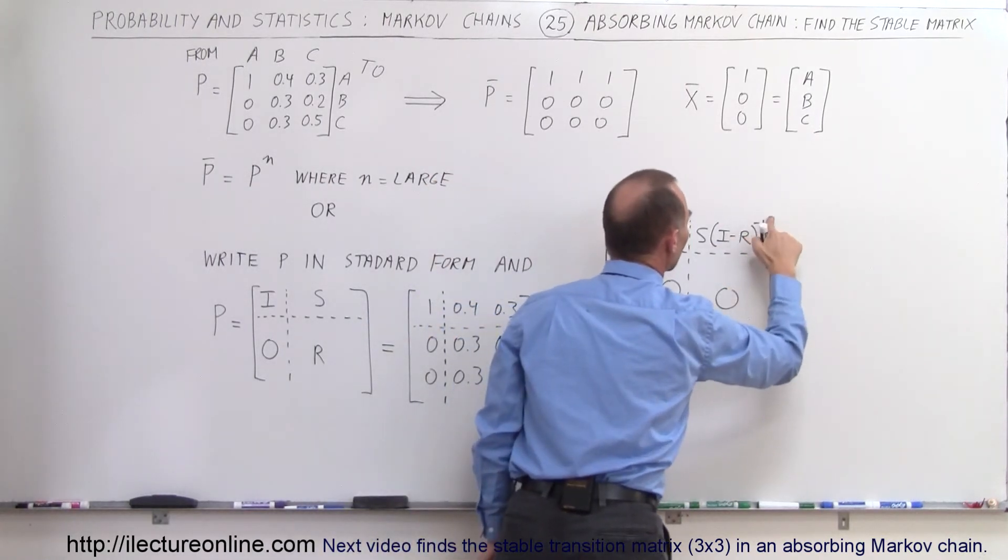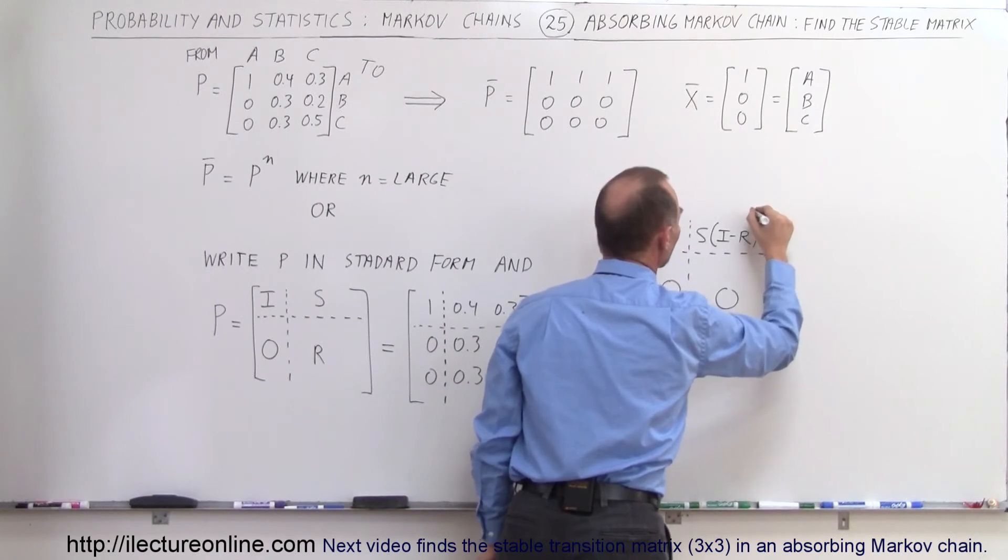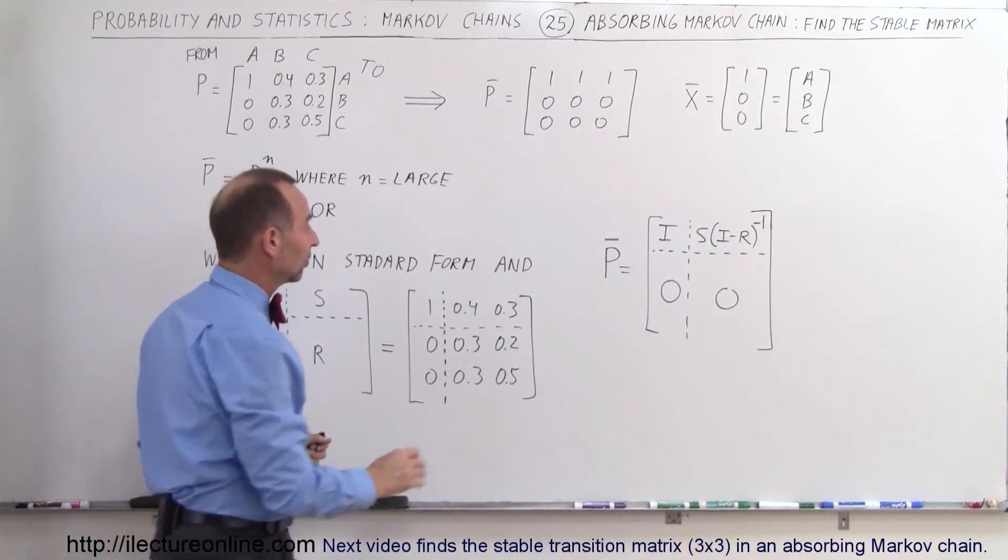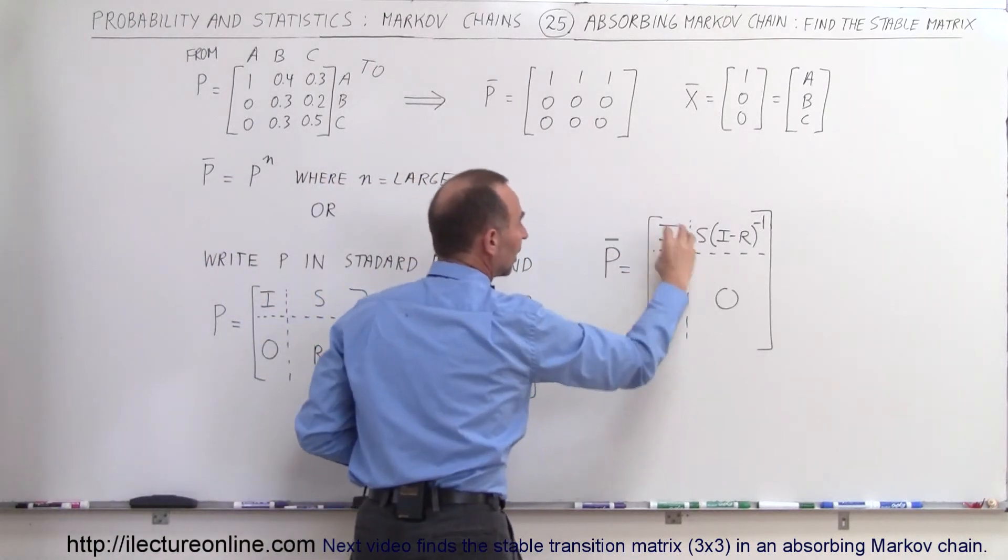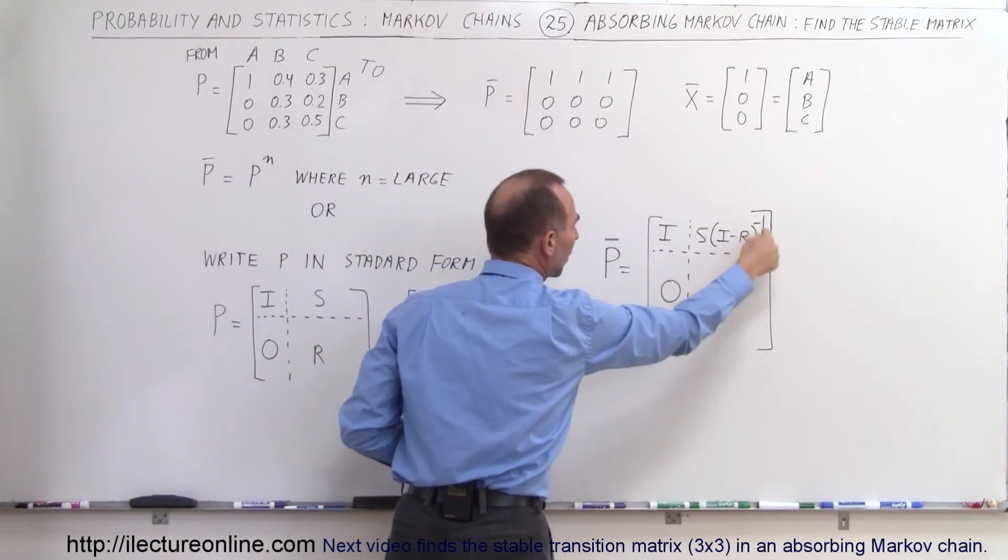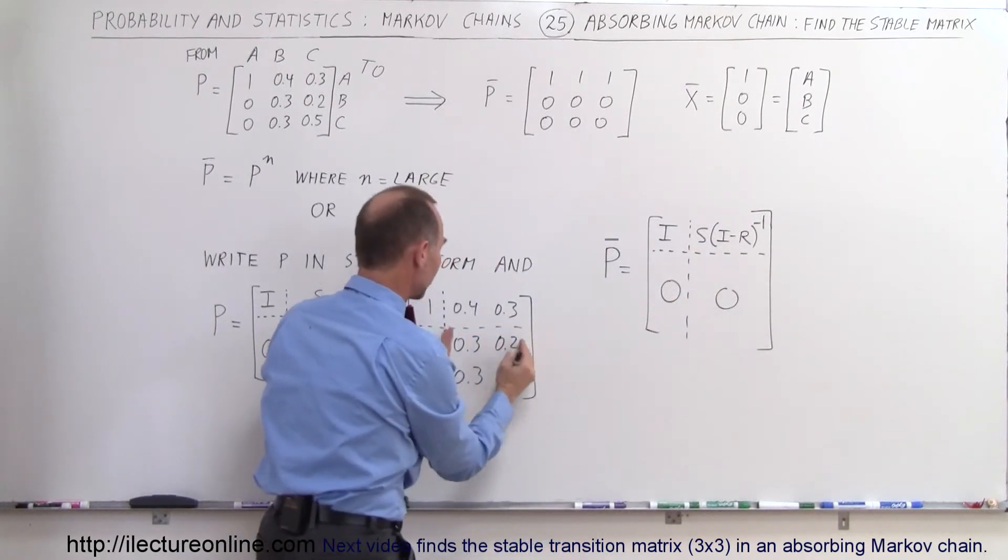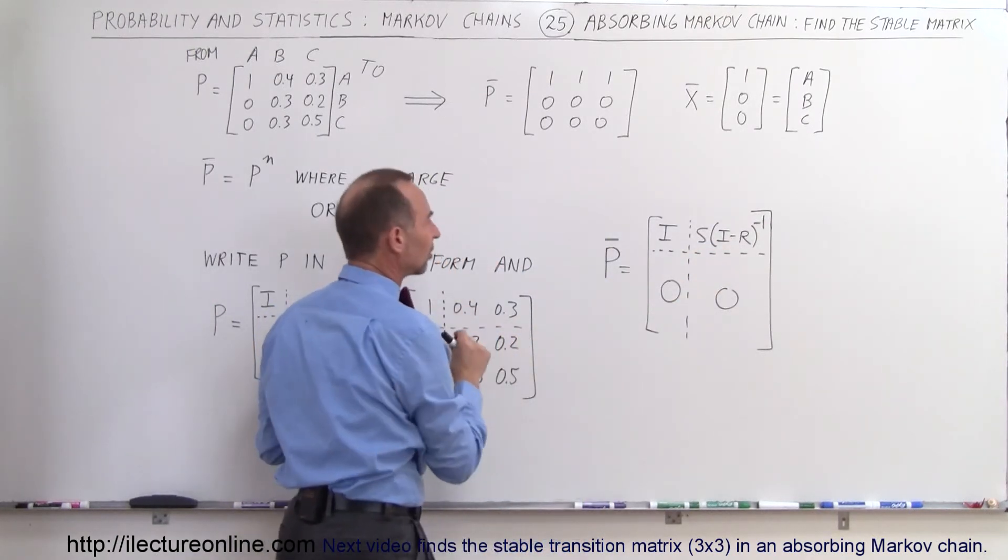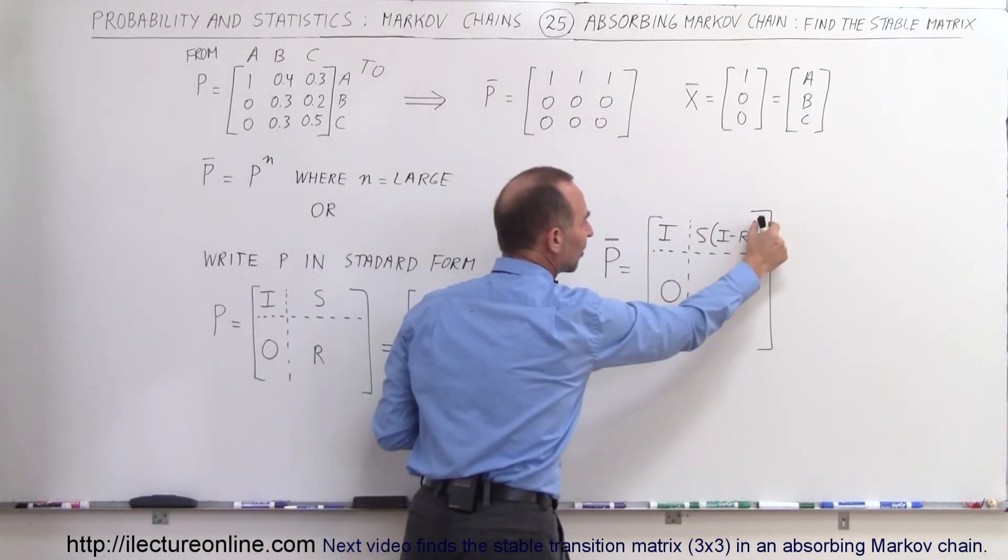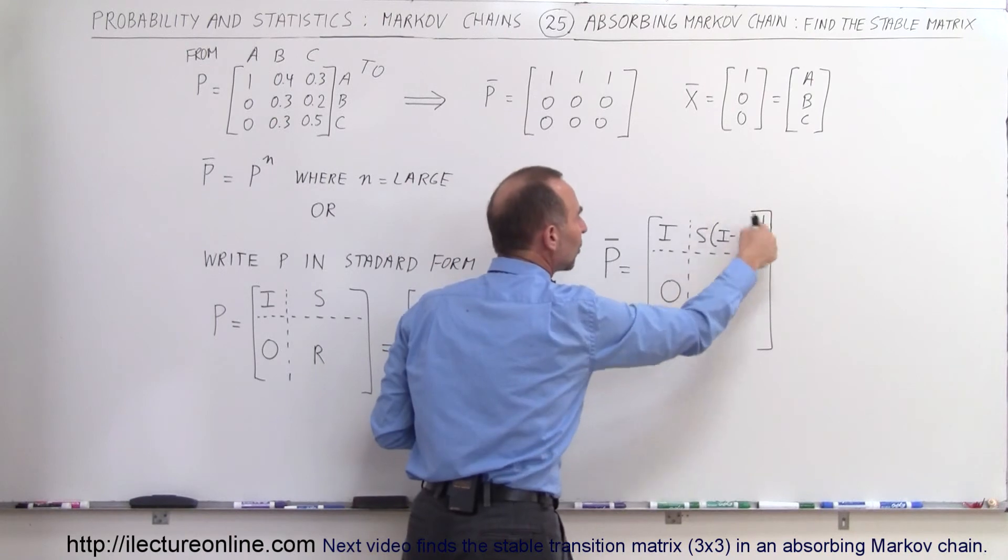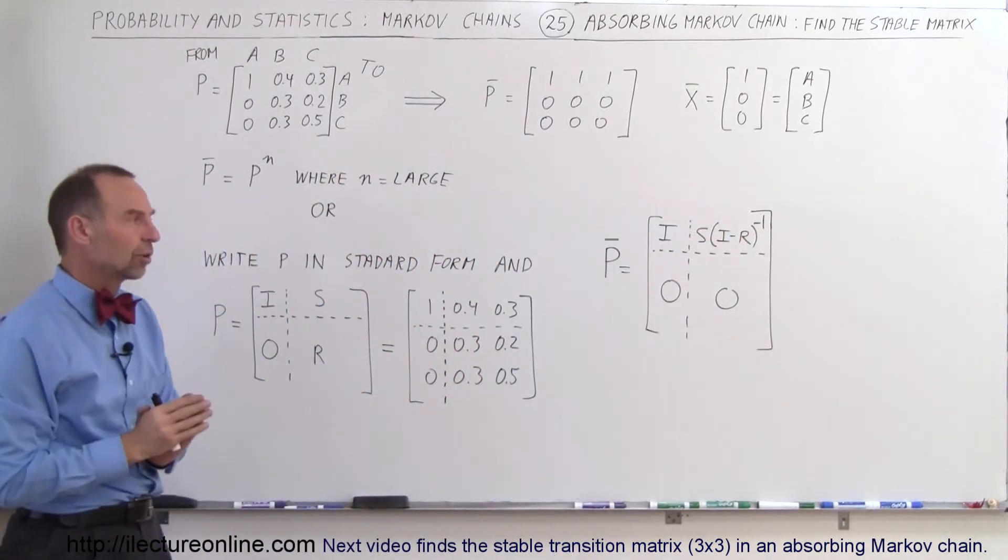Now that's kind of small, let me rewrite that so it should be a little bit bigger so you can see it like that. So what we're going to do is these will become all zeros, there will still be the identity matrix, and on here what we'll get is the identity matrix minus the R matrix—so it's this matrix minus the R matrix—we then take the inverse of that and then we multiply times the S matrix and that will be the values that we get over there and that's how we find the stable matrix.